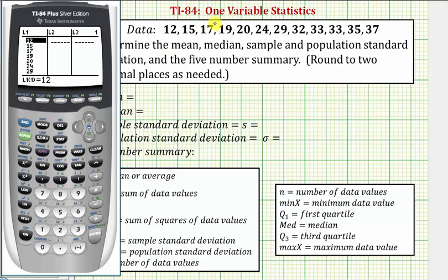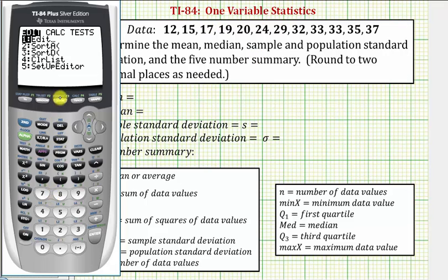Now to run the one variable statistics, we press the stat key, right arrow once to calculate. We want this first option, one variable statistics. So we can press 1, or just enter, because 1 is already highlighted.